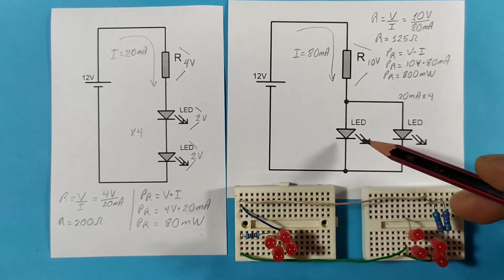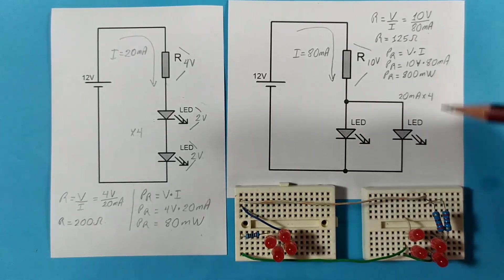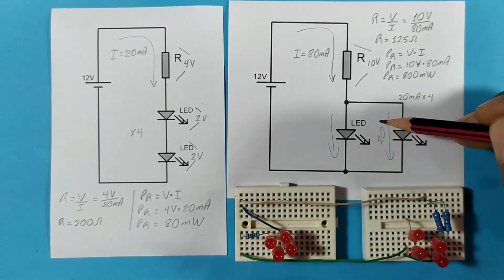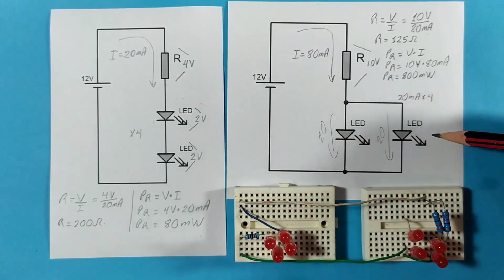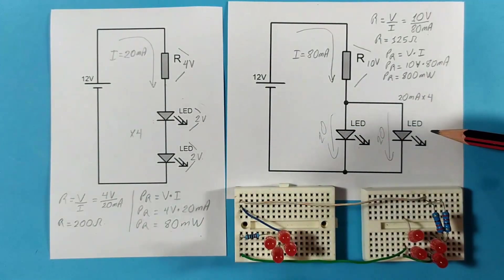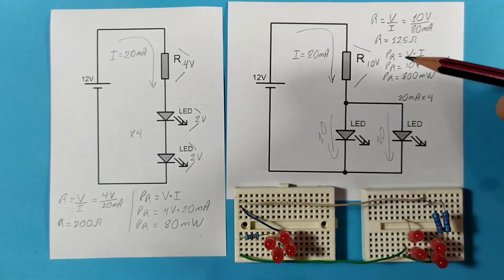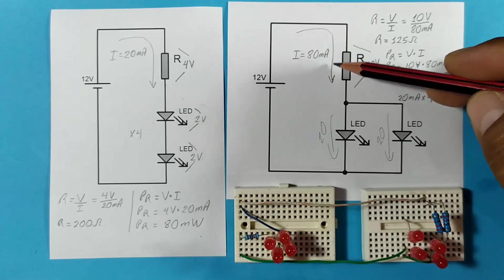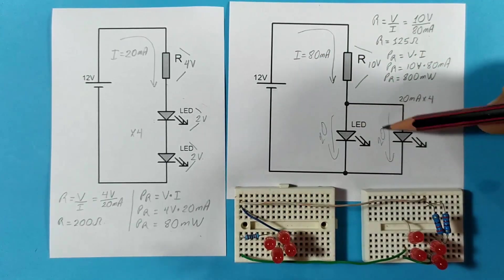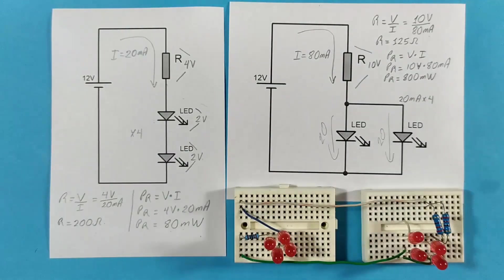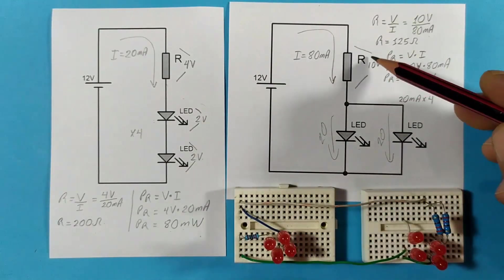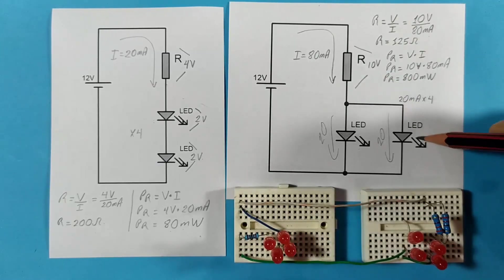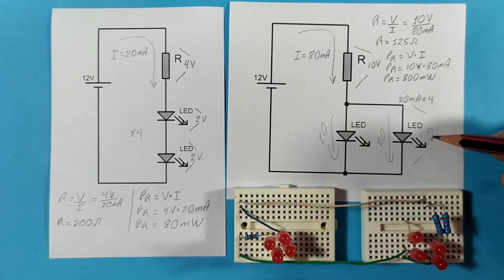On the right side, however, having them in parallel to each other means that 20 milliamps must pass through each branch or each LED. Added together, this would give us 80 milliamps, and those 80 milliamps must be supplied by the resistor. 80 milliamps must pass through it, which will be divided between all the LEDs. But 10 volts must also fall on it since the LEDs are in parallel, so the voltage drop is the same for all of them, which is 2 volts.